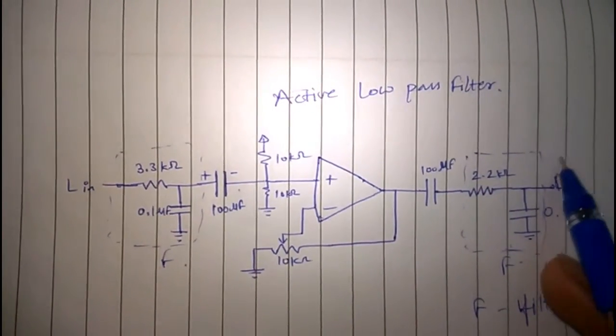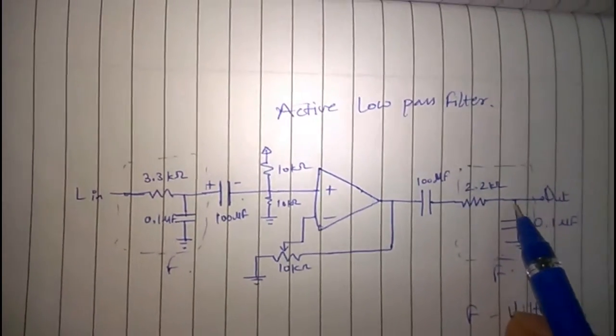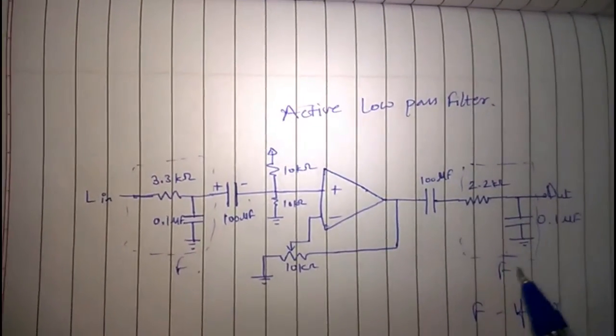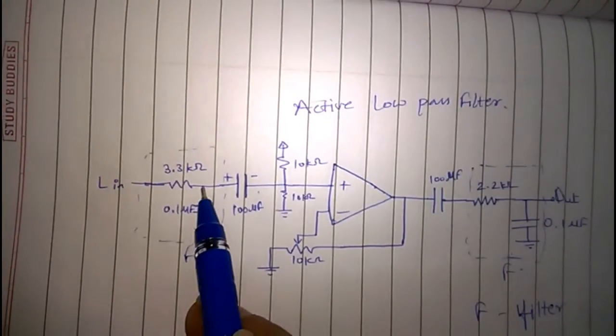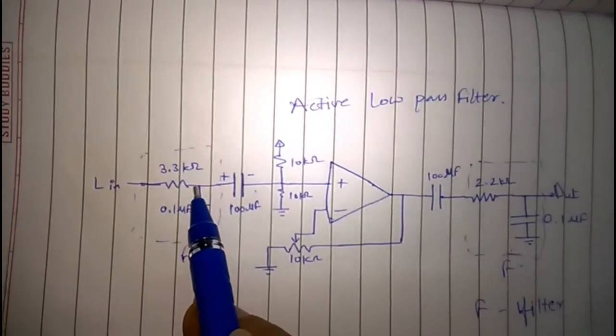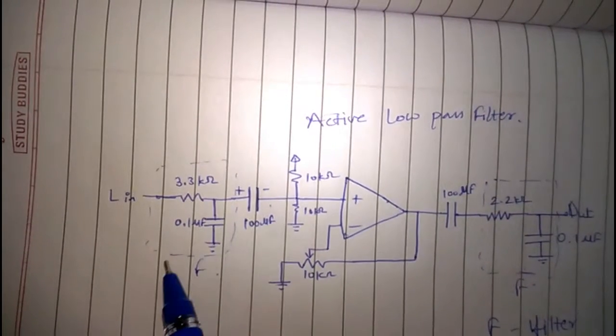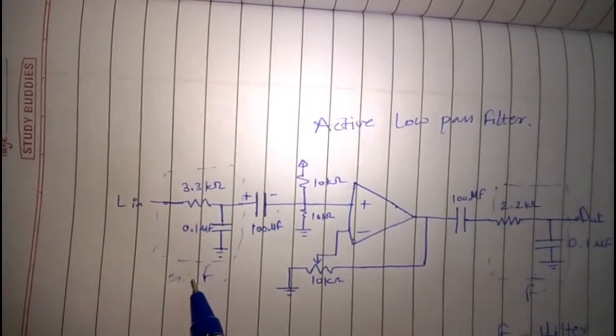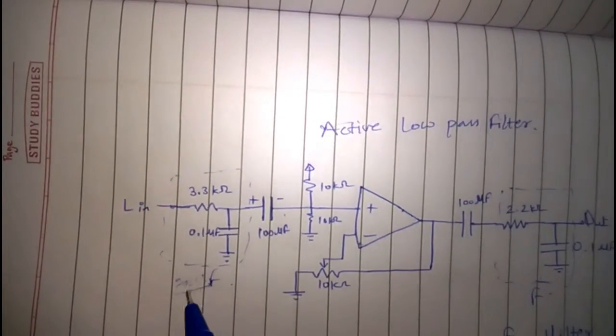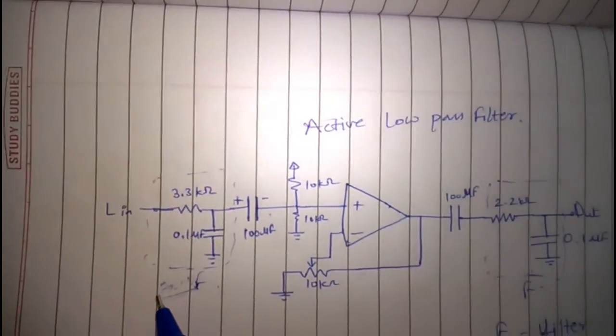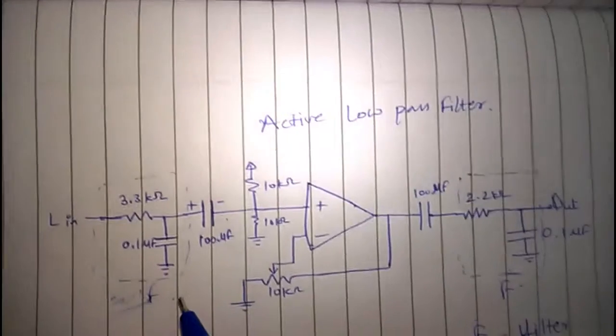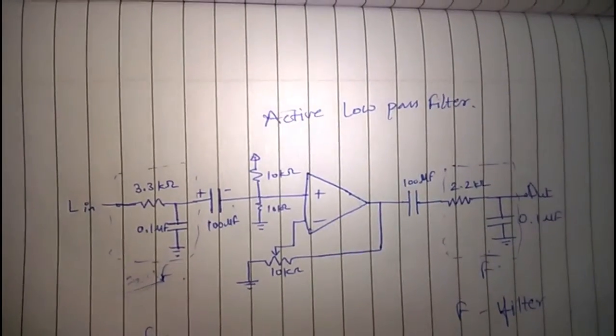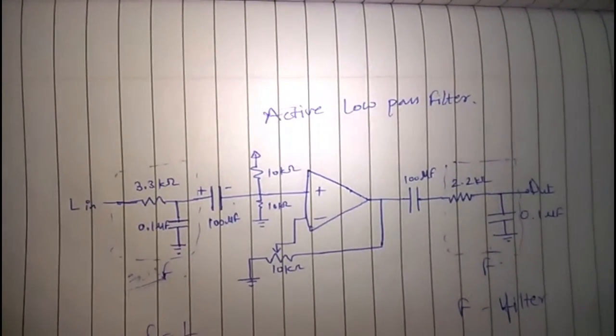I'll go through the circuit real quickly. First of all, there's this RC filter stage that blocks frequencies around 700 Hertz. I'm not sure of the exact figure, but it should be around that. You can calculate using the formula f equals 1 by 2 pi RC.